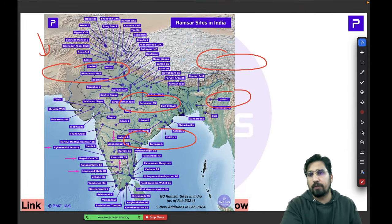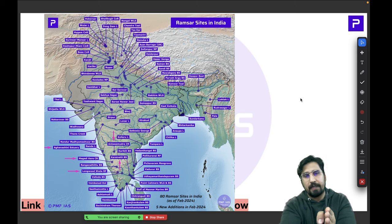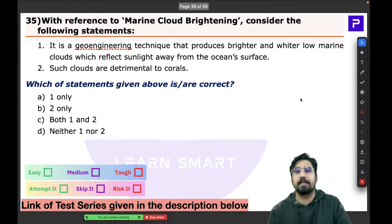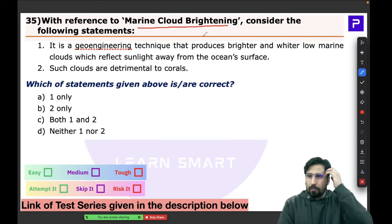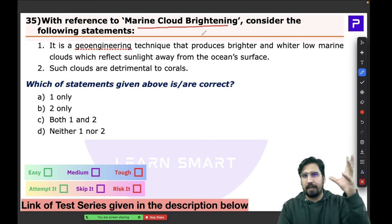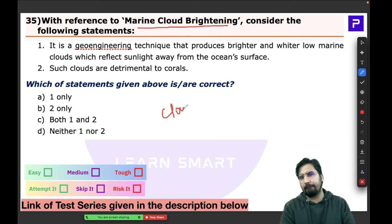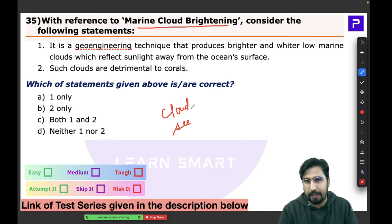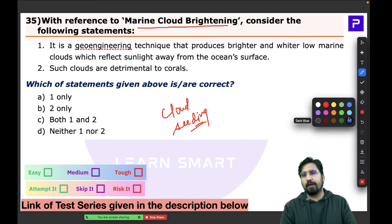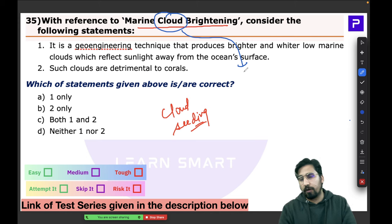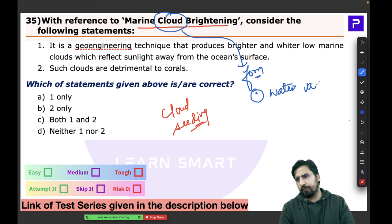Question 35 is about Marine Cloud Brightening. To understand it, recall cloud seeding. For cloud formation, two basic requirements are needed: water vapor and hygroscopic nuclei. Hygroscopic nuclei can be any aerosol — dust particles, sea salt, pollen grains — which provide a platform where water vapor molecules can attach and form clouds.